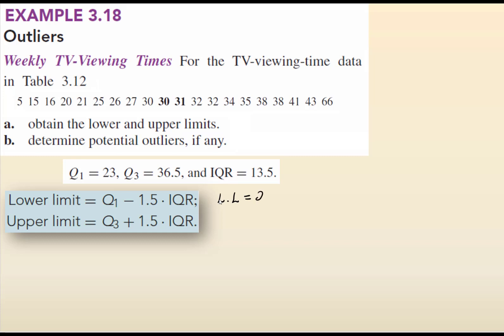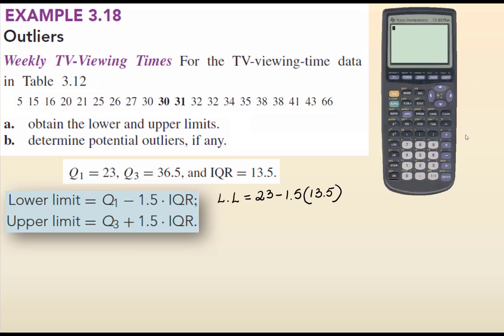We also calculated the interquartile range. Now we're going to calculate the lower and the upper limit using the formula given: Q1 minus 1.5 IQR for the lower limit, and for the upper limit, Q3 plus 1.5 IQR.